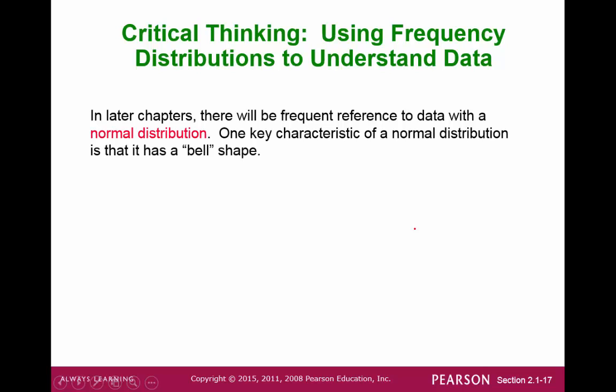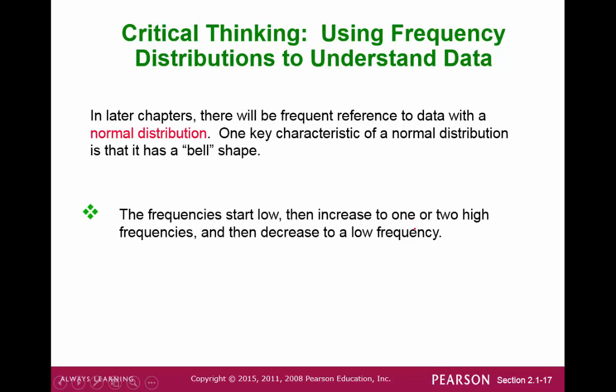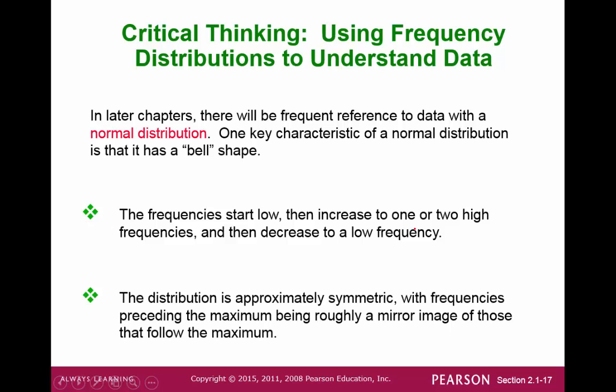Later on, we're going to be looking at normal distributions. And a normal distribution is a distribution that has a shape of a bell when we see it in the graph. The frequency starts off low and then increases to a high part and then decreases back to a low frequency. Sometimes we call this symmetric.